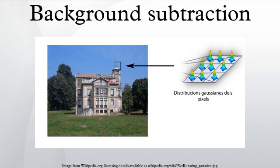Frame differencing: a motion detection algorithm begins with the segmentation part where foreground or moving objects are segmented from the background. The simplest way to implement this is to take an image as background and take the frames obtained at time t, denoted by I(t), to compare with the background image denoted by B. Using simple arithmetic calculations, we can segment out the object by using image subtraction — for each pixel in I(t), take the pixel value P(I, t) and subtract it with the corresponding pixel at the same position on the background image, denoted as P(B).